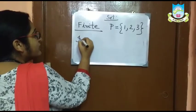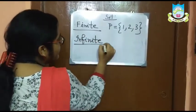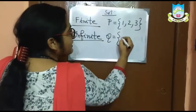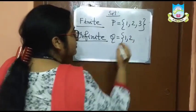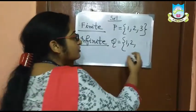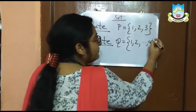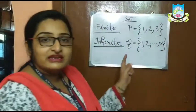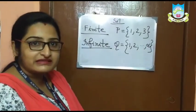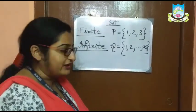Now what is an infinite set? In an infinite set, we cannot count the number of elements. For example, set Q is a set of natural numbers, which starts from 1 and goes till infinity. As we cannot count the number of elements of this set, set Q is considered an infinite set.